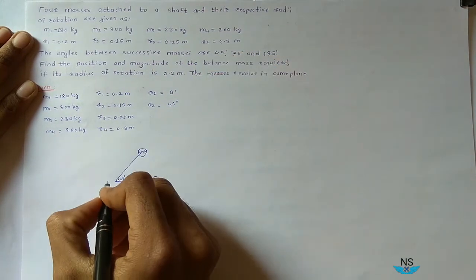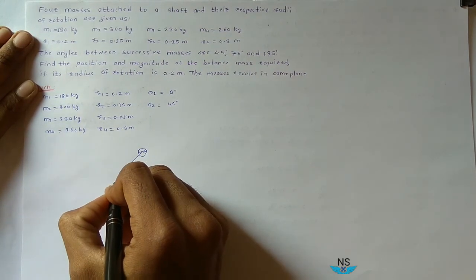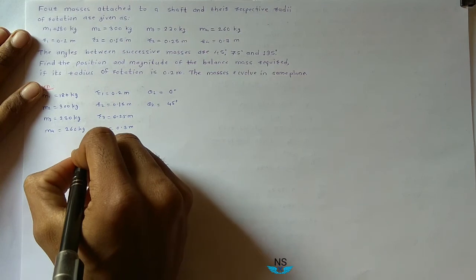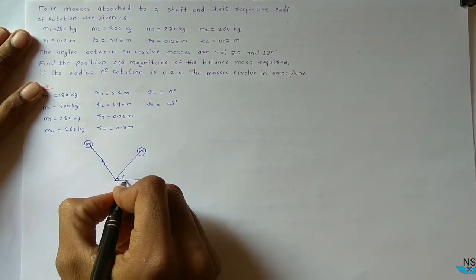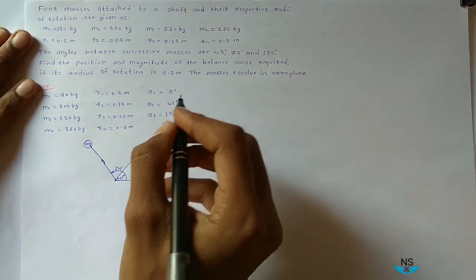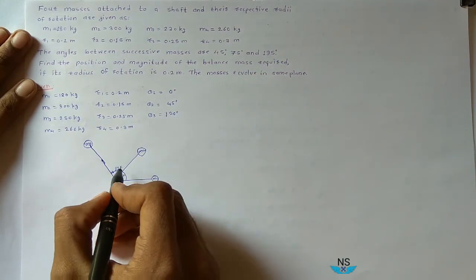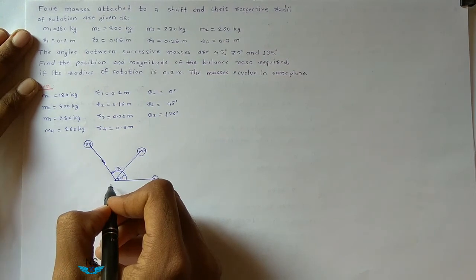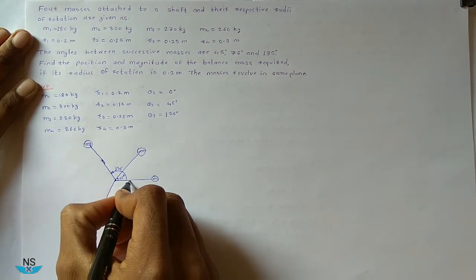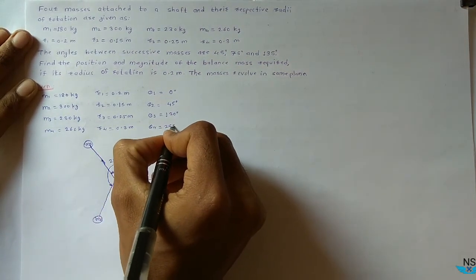The angle between m2 and m3 is 75 degrees. So 45 plus 75 is 120 degrees from the x-axis, so theta3 is 120 degrees. Now the angle between m3 and m4 is 135 degrees. So 120 plus 135 gives theta4 equal to 255 degrees.